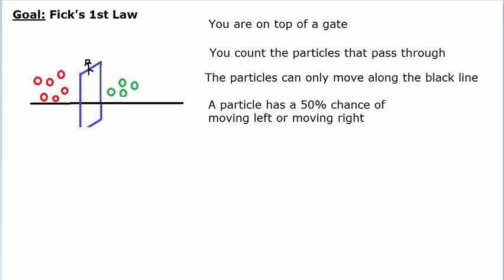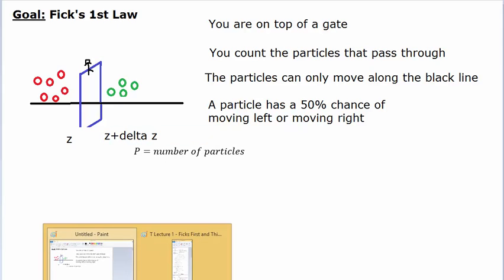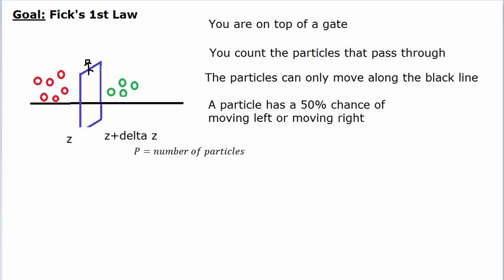Let's start modeling the problem, because that's what you're going to be doing in most of transport phenomena — modeling problems such as this. Let's introduce P as the number of particles we have, and introduce notation for which side of the gate we mean. The left-hand side we'll call Z, and the right-hand side we'll call Z plus delta Z.